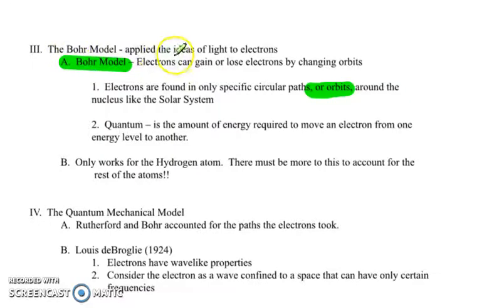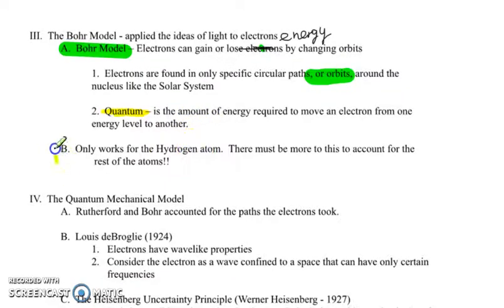So if we look at the Bohr model, he took those electrons, put them on rings, and he said that electrons can gain or lose energy by changing orbits. Electrons are only found in the specific circular paths or orbits around the nucleus, just like the solar system. And the important word is quantum, that's the amount of energy required to move an electron from one energy level to another. And that's one photon, one packet of light. This was really great, and it solved a lot of the problems that early scientists had identified. However, his model only worked for the hydrogen atom. It broke down when they tried to apply it to larger atoms. So there must be more to what was actually going on to account for the rest of these phenomenon they observed.